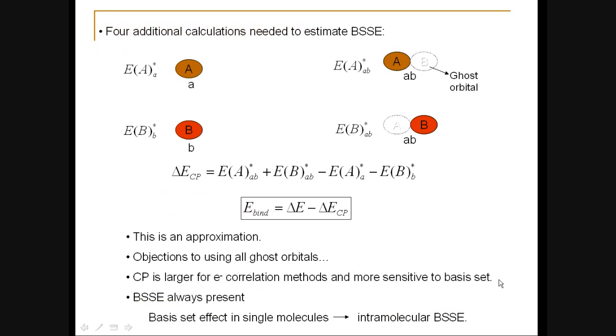Now, to get an estimate of the basis set superposition error, we need four additional calculations. And these are the following.